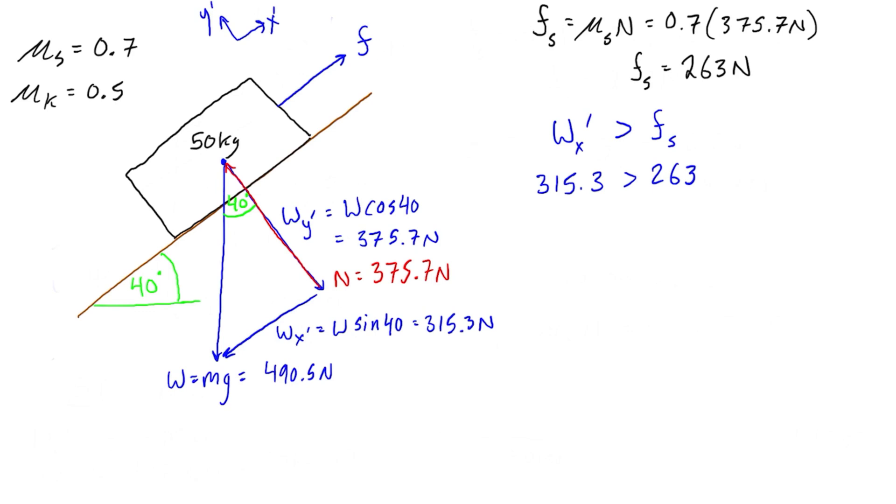So then what we need to do is we need to calculate the actual friction force that's going to be for the kinetic friction. Basically, because we know the block will be sliding, we have to use μk. So let's say that we have f with the subscript here for fk, kinetic friction. This is going to be equal to μk times N, which is equal to 0.5 times the normal force, which was 375.7 newtons. So the actual friction, the kinetic friction fk, is going to be equal to 187.85 newtons.